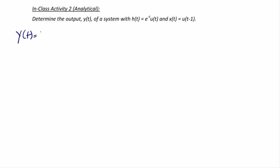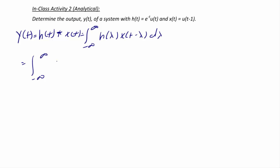Let's look at in-class activity 2. Determine the output y(t) of a system with h(t) = e^{−t} u(t) and x(t) = u(t−1). Since convolution is commutative, we use y(t) = h(t) * x(t) = ∫ from −∞ to +∞ h(λ) x(t−λ) dλ. So the integral becomes ∫ from −∞ to +∞ e^{−λ} u(λ) · u(t−λ−1) dλ.